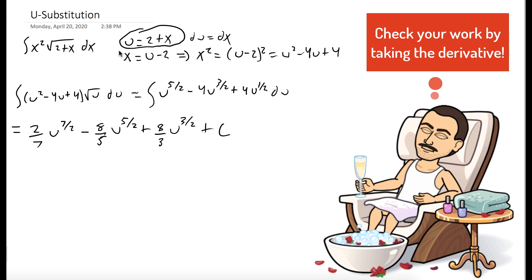And now we'll use the fact that u is equal to 2 plus x. The question started with the variable x. We better end with the variable x. So wherever we see a u we replace it with 2 plus x.